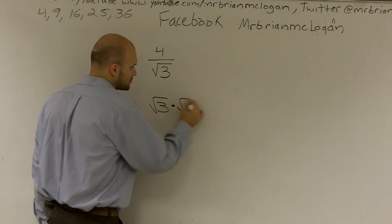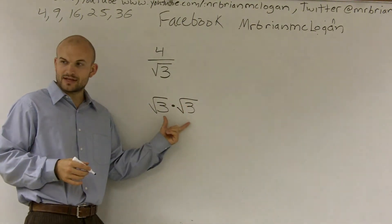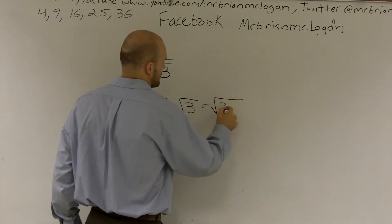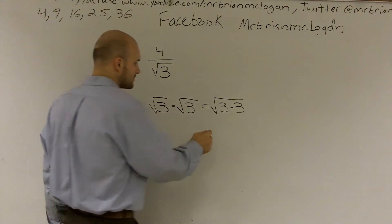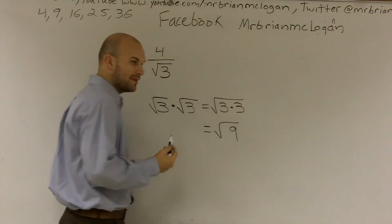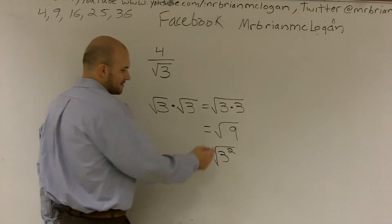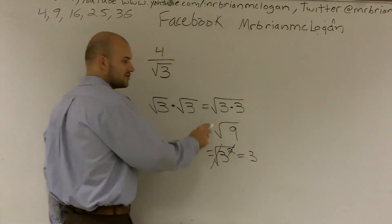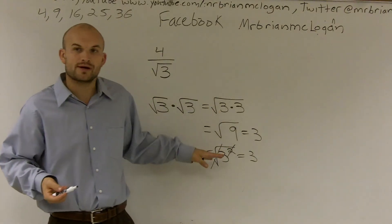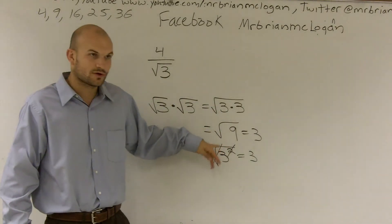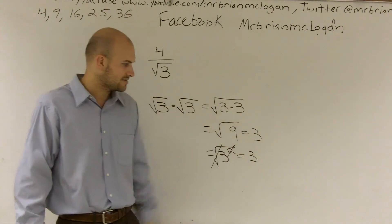Square root of 3 times the square root of 3 — whenever you multiply a radical times a radical, you can multiply the two numbers inside under the same radical. We know that 3 times 3 is 9, and the square root of 9 equals 3. You should also know that the square root and something squared are inverse operations, so they cancel out.